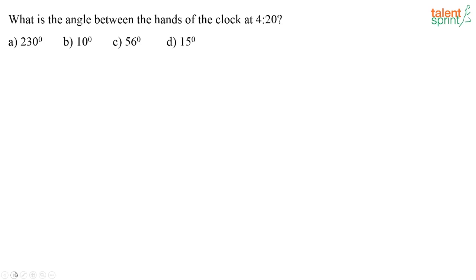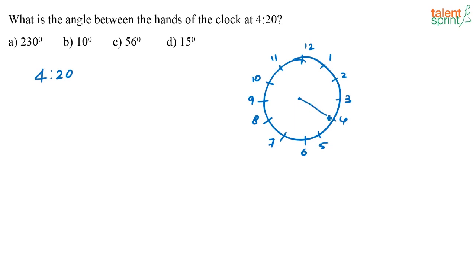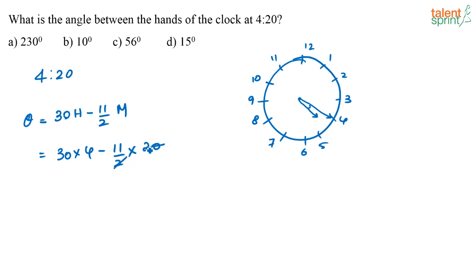Now let us look at a question: what is the angle between the hands of the clock at 4:20? At time 4:20, the hour hand is ahead of the minute hand, so we use the first formula: θ = 30H − 11/2·M = 30 × 4 − 11/2 × 20 = 120 − 110 = 10 degrees. So the answer for this question is option B, 10 degrees.